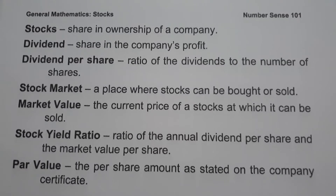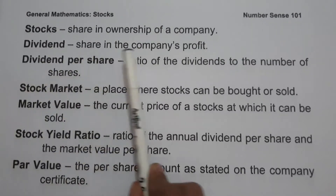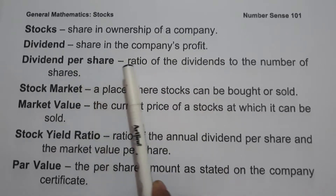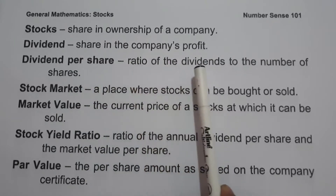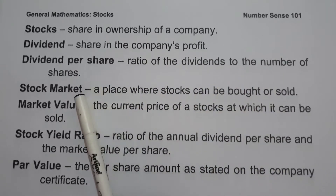There are two different kinds of stocks: the first one is the common stocks and the second one is the preferred stocks. Both of them will receive dividends. When we say dividend, that is the share in the company's profit. Dividend per share is the ratio of the dividends to the number of shares.